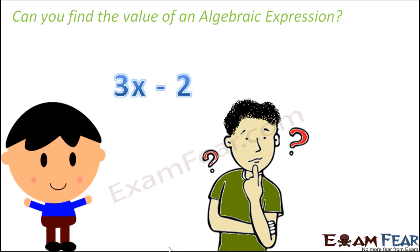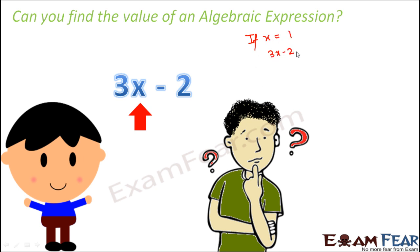So basically we can find the value of an algebraic expression only if we know the value of the variable. For example, in this expression, x is the variable. So if we know the value of x, then we can find out the value of this expression. If the value of x is equal to 1, then the value of this expression would be 3 into 1 minus 2, that is 3 minus 2, which is equal to 1.